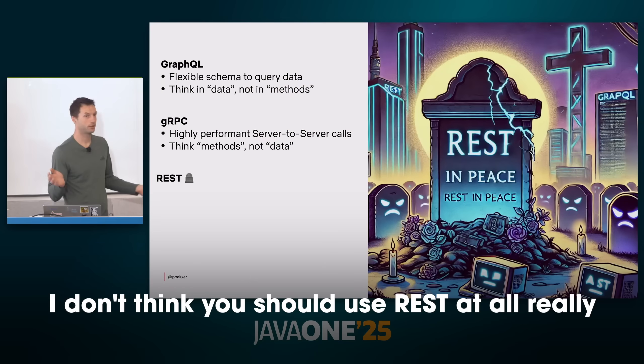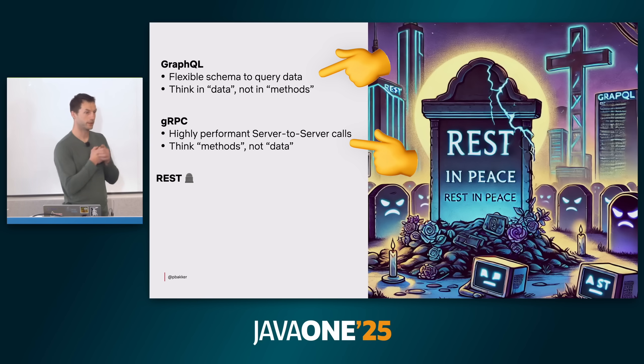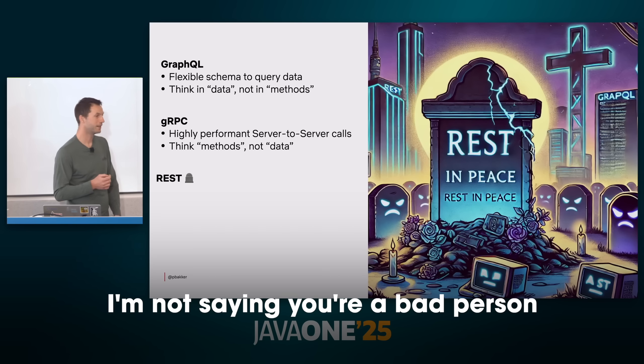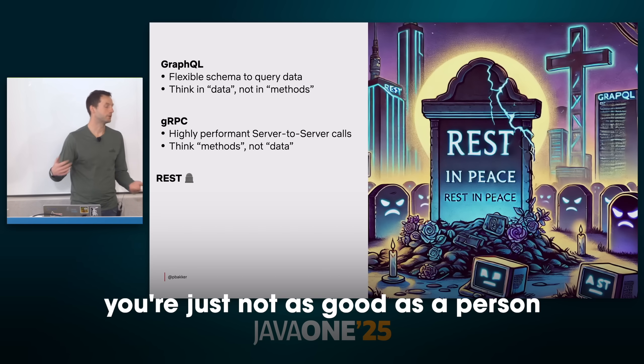gRPC is fast. It's binary. It's schema-based — which is exactly what Netflix needs. Paul's take: 'I don't think you should use REST at all, really.' GraphQL is their front-end-to-back-end API of choice, and gRPC is their service-to-service choice. REST is for quick and dirty hacks, and that's really it. 'I'm not saying you are a bad person if you ever do REST — you're just not as good a person.'